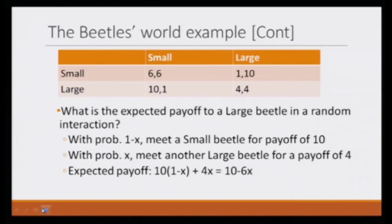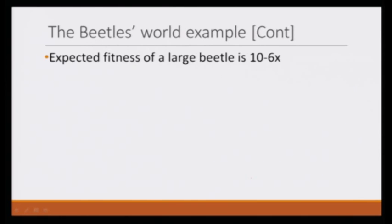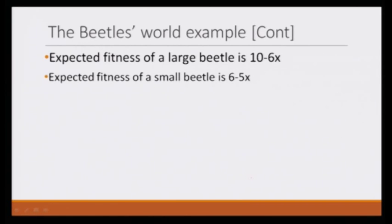What would be the expected payoff to a large beetle in this new changed environment? With probability 1 minus x, a large beetle would meet another small beetle, and the payoff is 10. With probability x, this large beetle would meet another large beetle, and the payoff is 4. So the expected payoff is 10 multiplied by (1 minus x) plus 4 multiplied by x, giving 10 minus 6x. Expected fitness of a large beetle is 10 minus 6x, and expected fitness of a small beetle is 6 minus 5x.